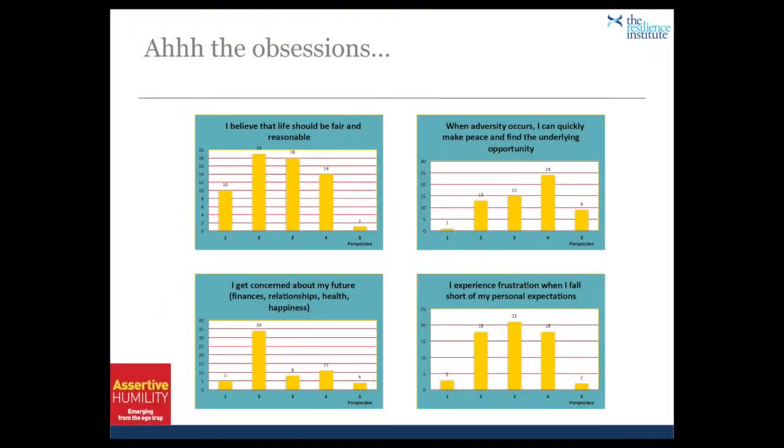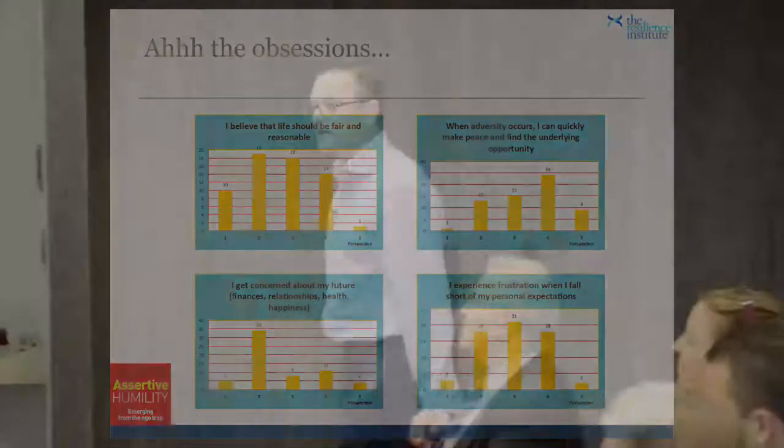Let's come back down to the ego model and the obsessions. How did you travel on the obsessions? "I believe that life should be fair and reasonable." There's the data — you said it, not me. And only one of you said, actually, it ain't. Reality is it shouldn't and couldn't be fair. And the more I think it should, the more I'm going to be a little bit upset with life.